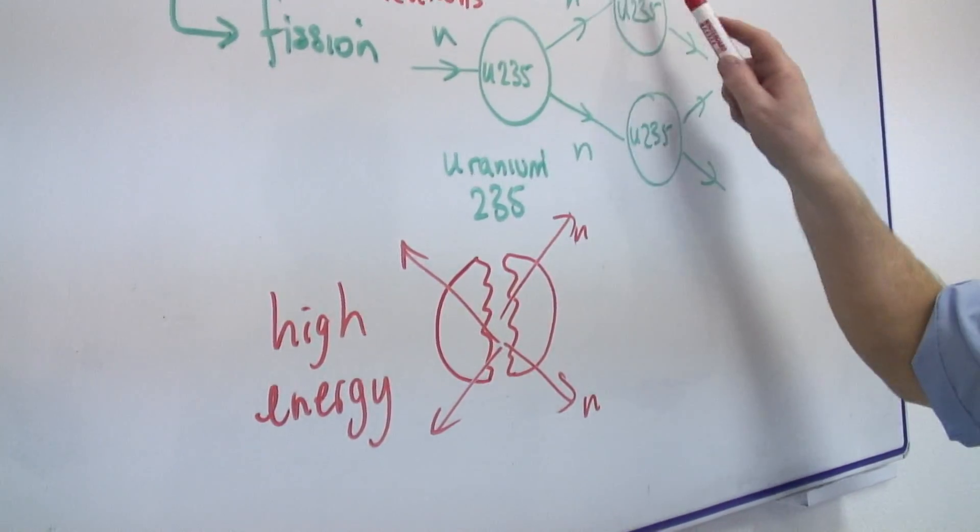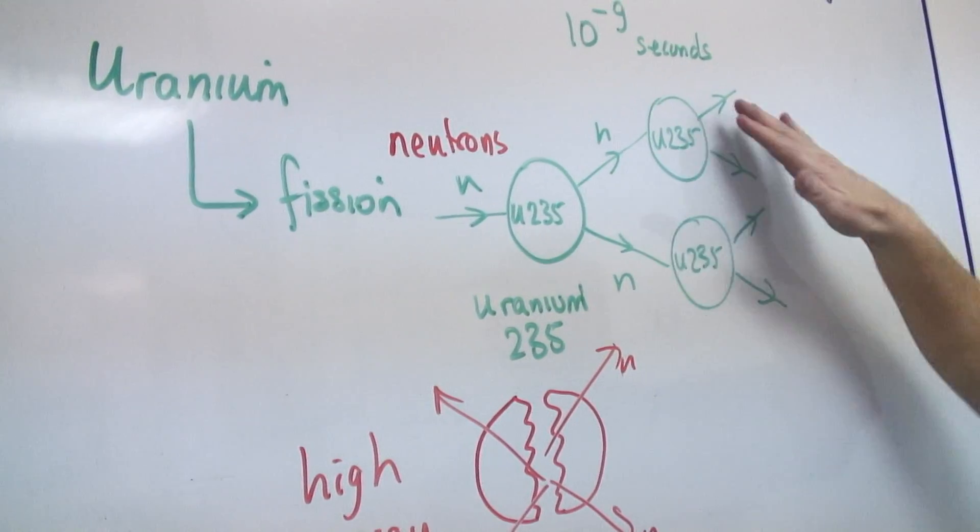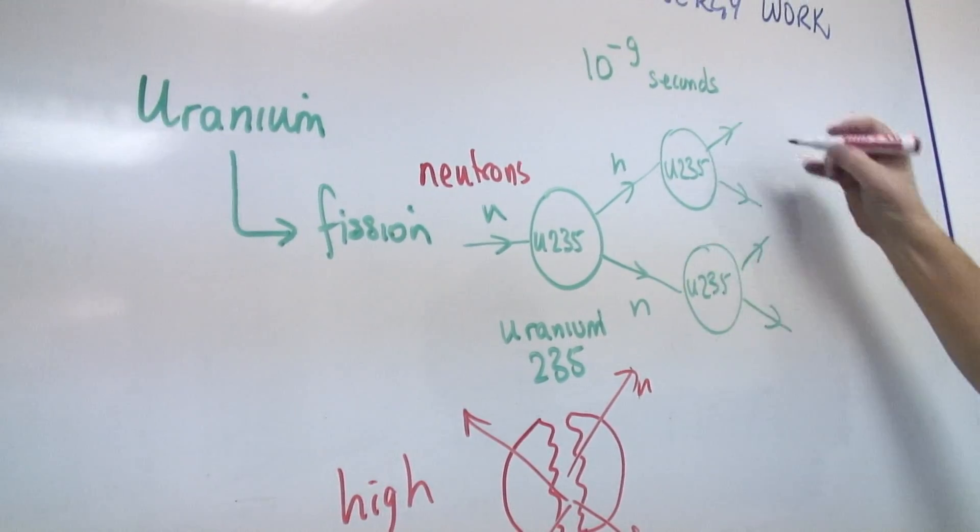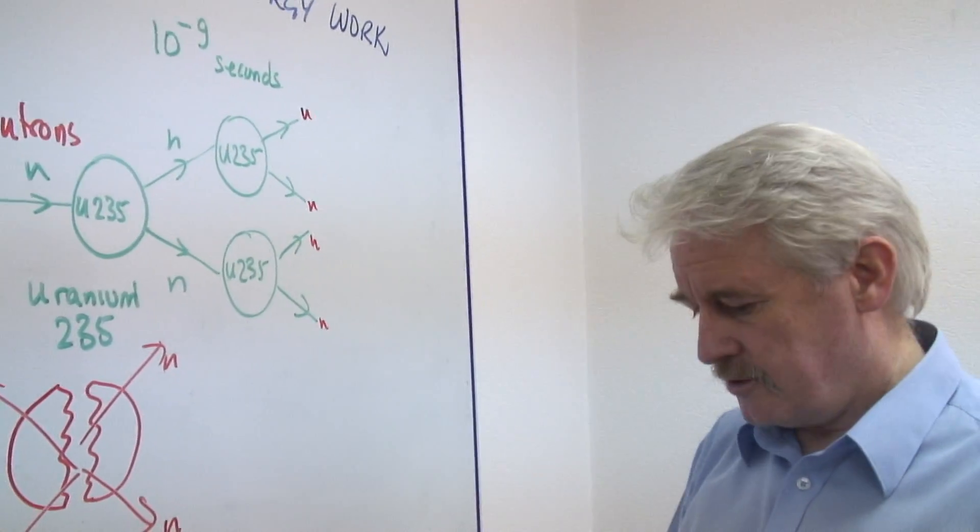And these neutrons can hit other uranium-235 atoms, and they can split up too. And they also produce neutrons. And see how many they are producing.